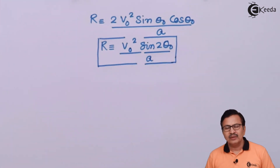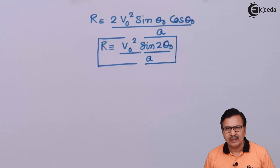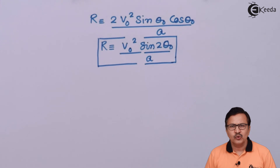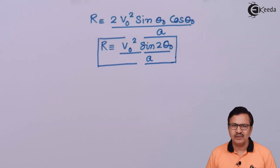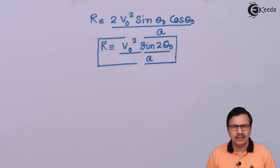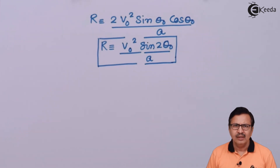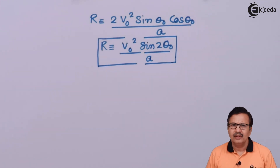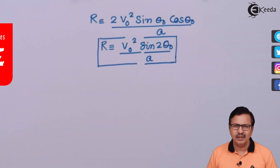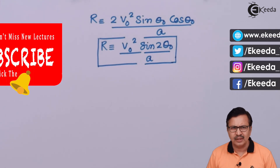So we have found the expression for the height, the range, and the total time for the case where an electron makes an angle theta with respect to the electric field. Thanks to all students for watching this video. Stay tuned to Ekeda and do subscribe. Thanks a lot.